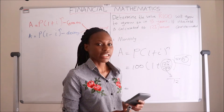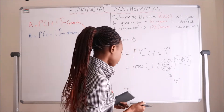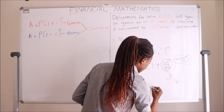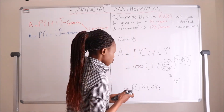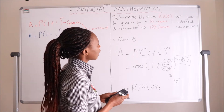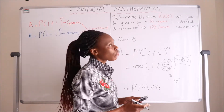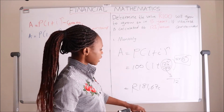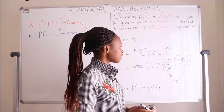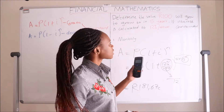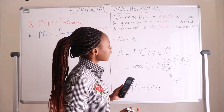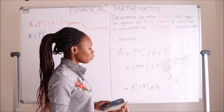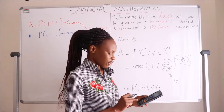Putting everything into the calculator: 100 times (1 plus 0.01) to the exponent of 5 times 12 equals 181.67 cents. So that means that in five years, if 100 rand has been compounded at 12% per annum compounded monthly, after five years this person will receive a value of 181.67 — that is what 100 rand will be worth in five years.